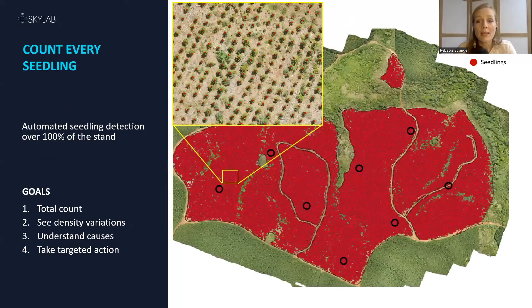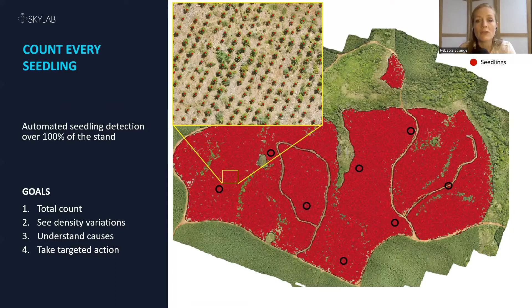So at Skylab, we count every single one of those seedlings. This can only be done with very high resolution data from drones. You not only get a total count, you see the density variation across the stand, and from that you can look at the causes of the variations, which in turn allows you to take targeted action.